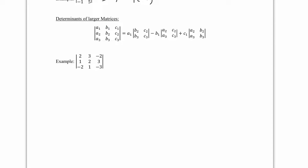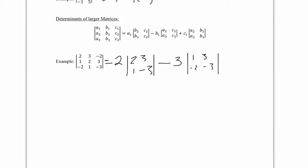We continue: look at entry C1, cross off its row and column, and find the determinant of that remaining block. In practice, we take the first entry 2 and the sub-block [2, 3, 1, -3], subtract 3 times the sub-block [1, 3, -2, -3], and add negative 2 times the sub-block [1, 2, -2, 1].